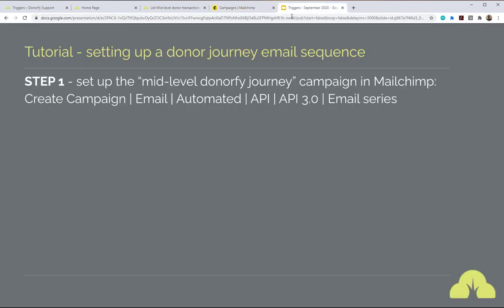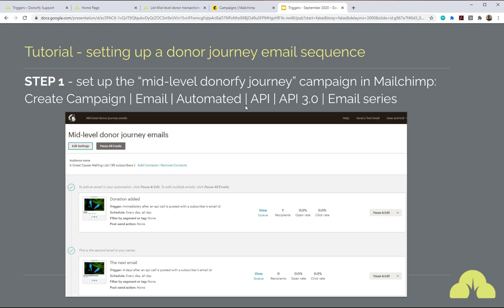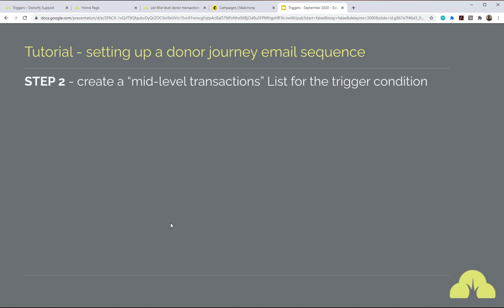So that was step one — set up the series, the campaign, in MailChimp. You should end up with something like this: your series of emails. You also have to start it — it doesn't start actually sending at that moment, but it switches the automation on so that when it receives the initiation from Donify, it will send its first email.